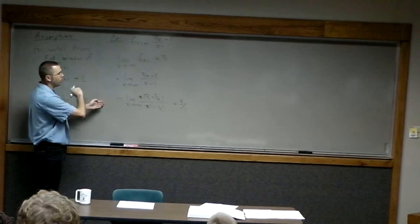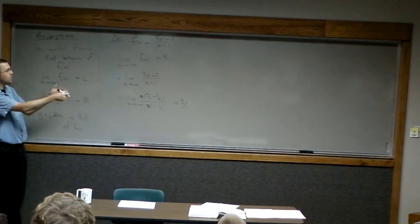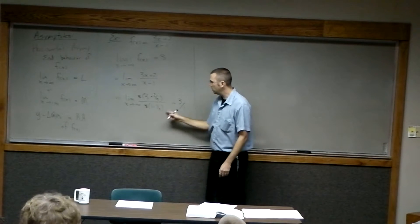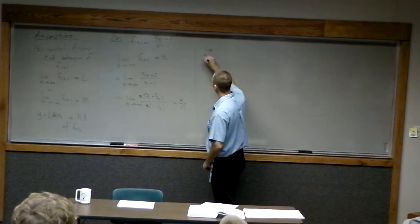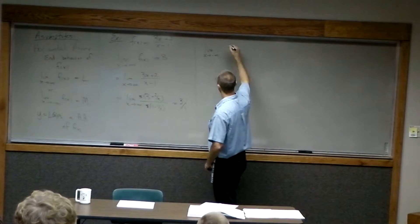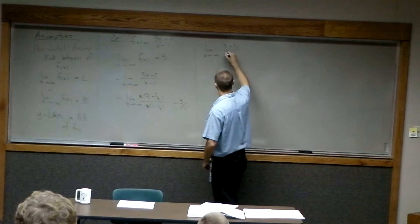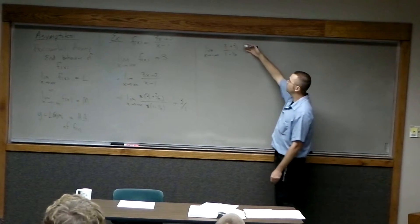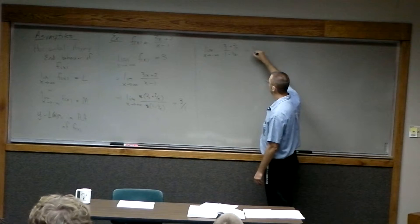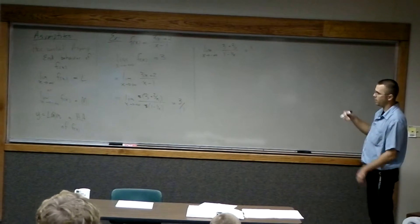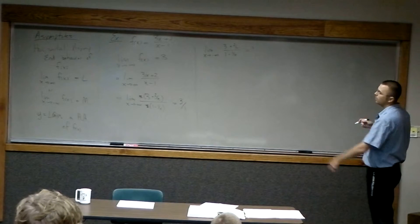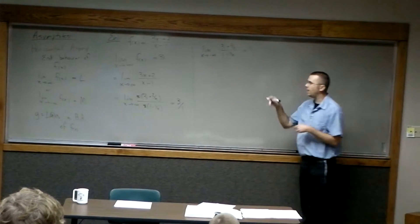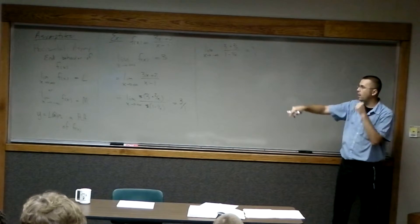This only investigated what happens when we go to positive infinity. We can do the same analysis for negative infinity. The limit as x goes to minus infinity of (3 + 2/x) / (1 - 1/x): as x gets really large in the negative sense, the top still goes to 3 and the bottom still goes to 1. So y equals 3 is a horizontal asymptote on the negative side as well — this function has horizontal asymptotes in both directions.